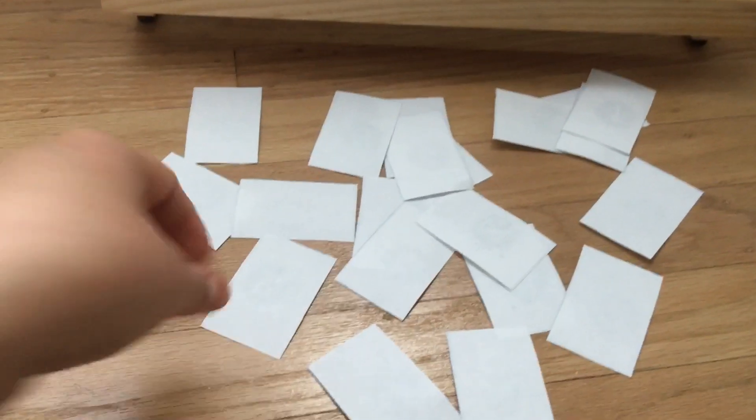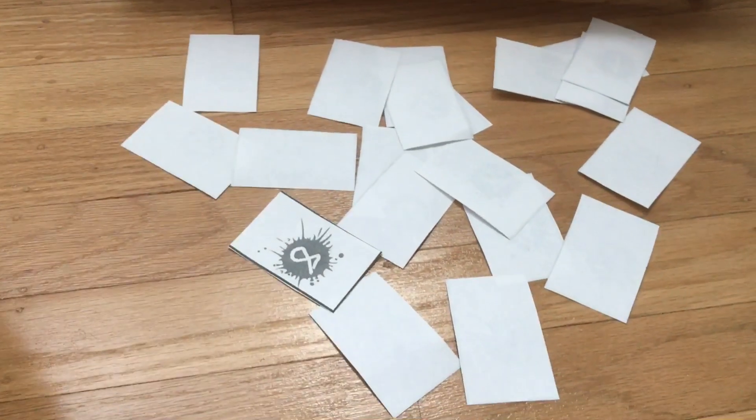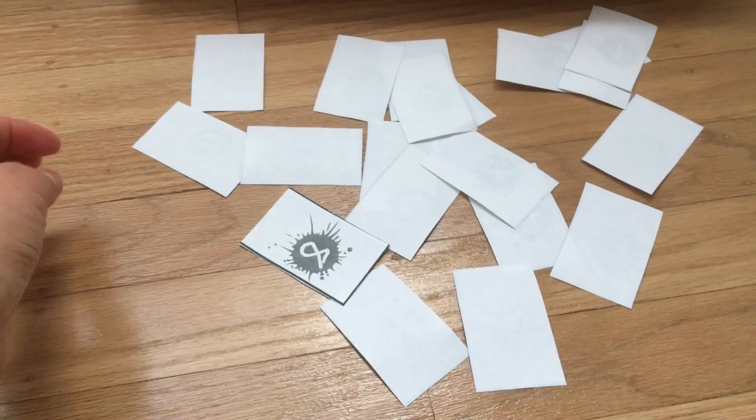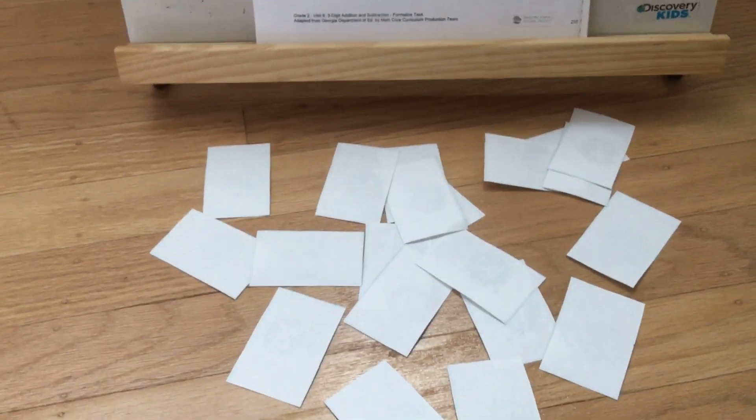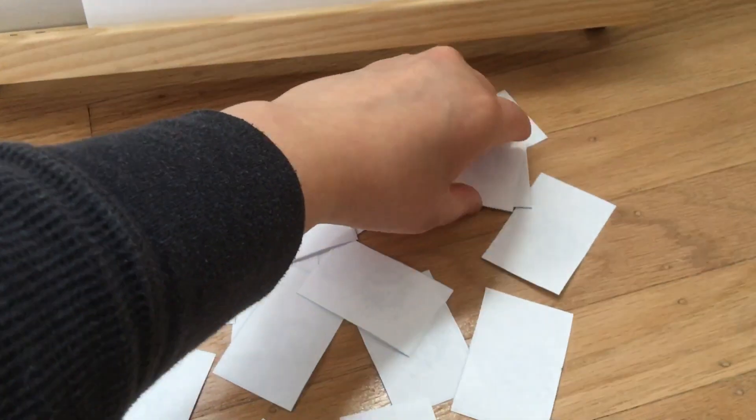First you want to cut out the number cards. There's two pages of them. Make sure you cut each page individually so you don't cut over the number. Cut out all the number tiles and then place them face down so you can't see them. Spread them all out.